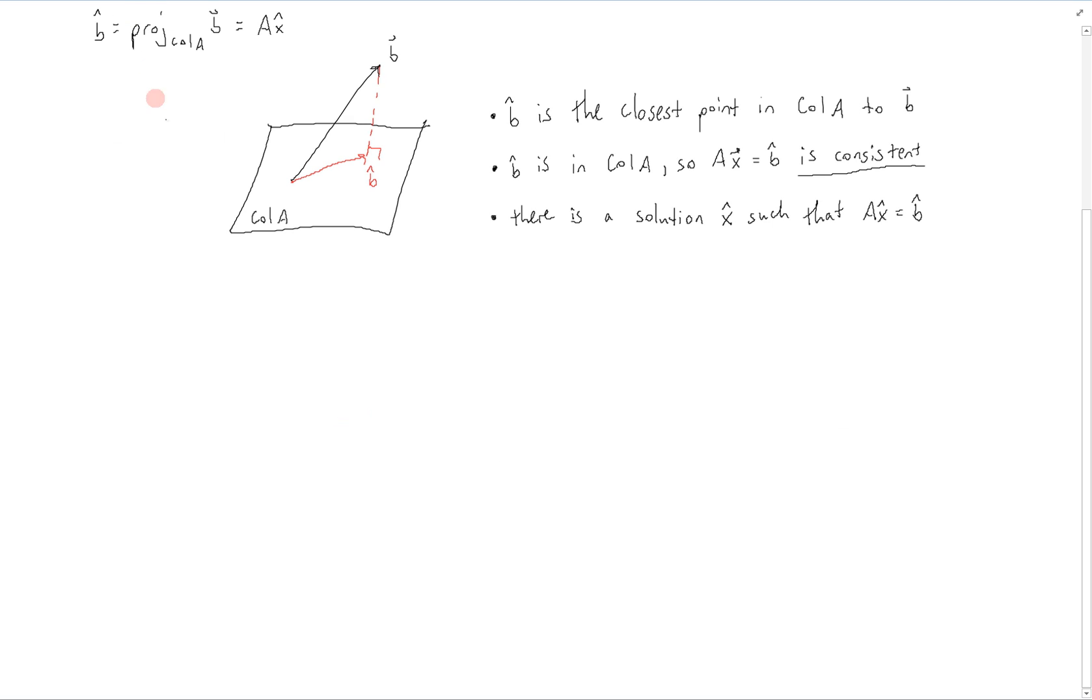Based on what we know about orthogonal projections, we also know that if b hat is the projection of b into the column space of a, then b minus b hat has to be orthogonal to the column space of a.